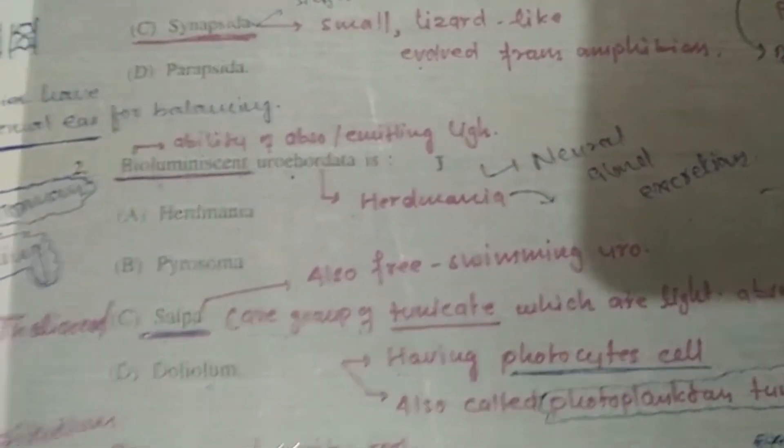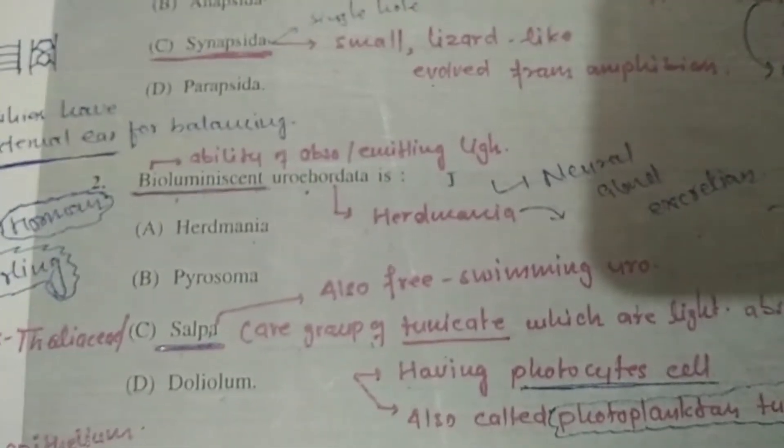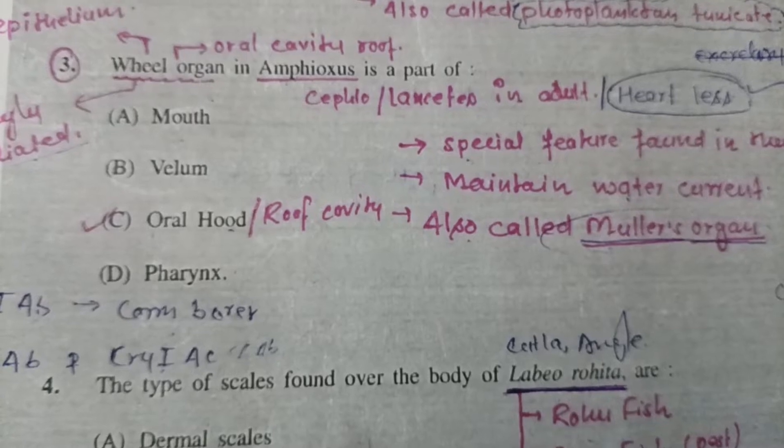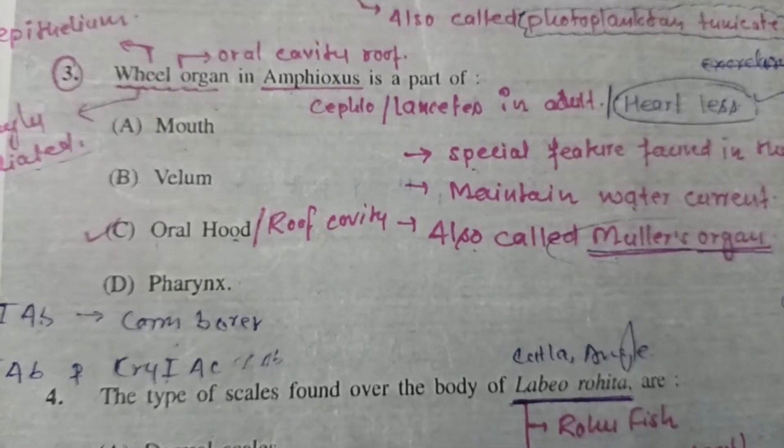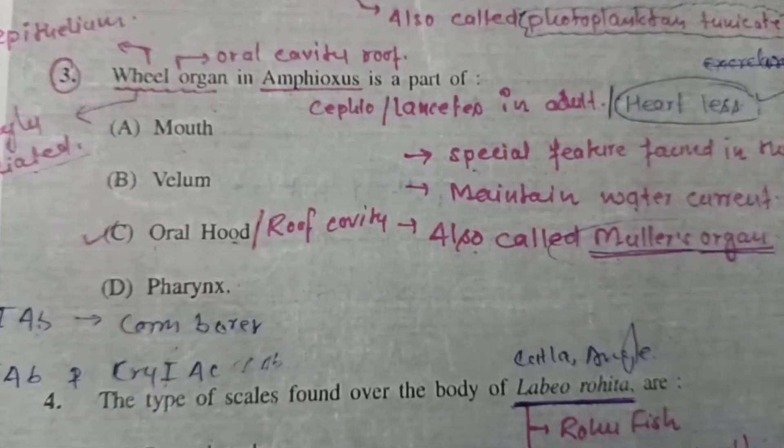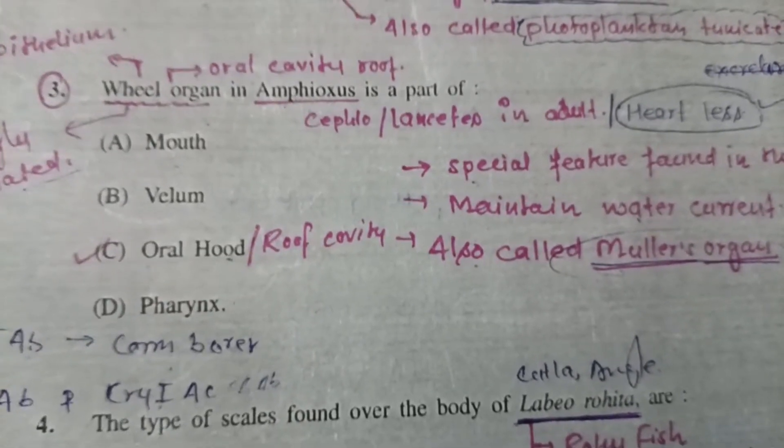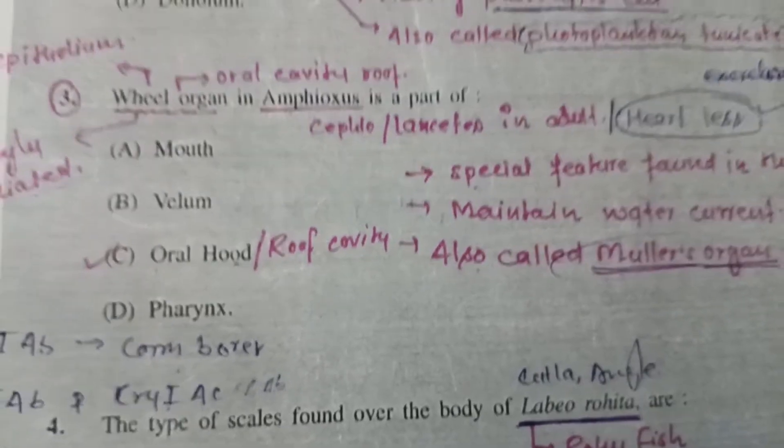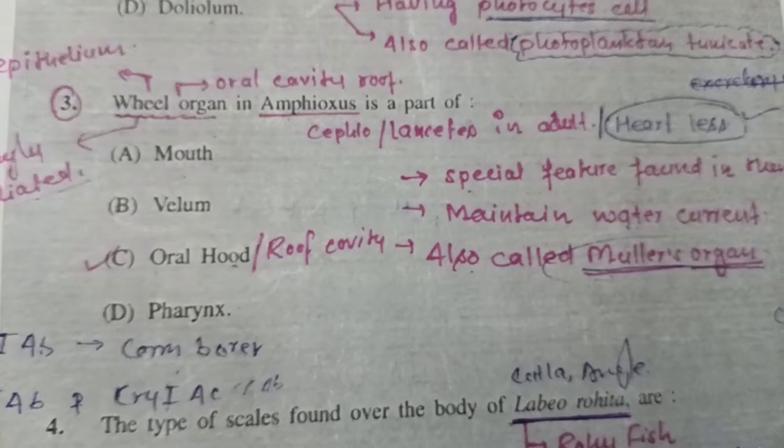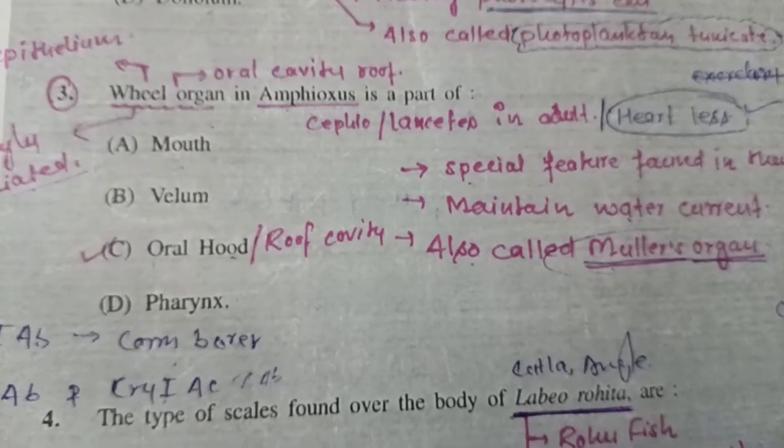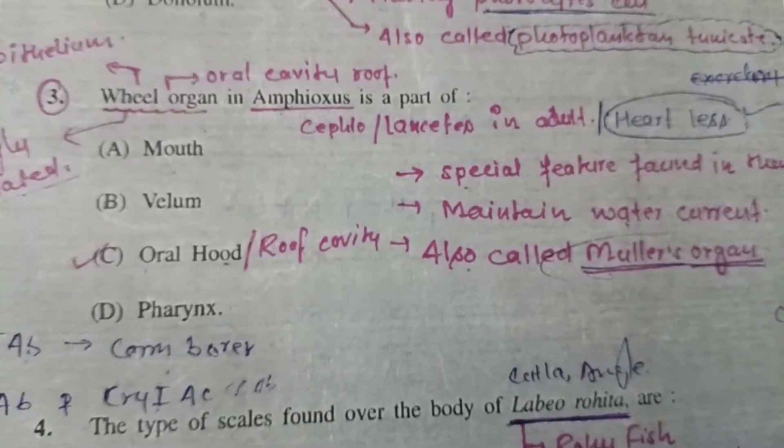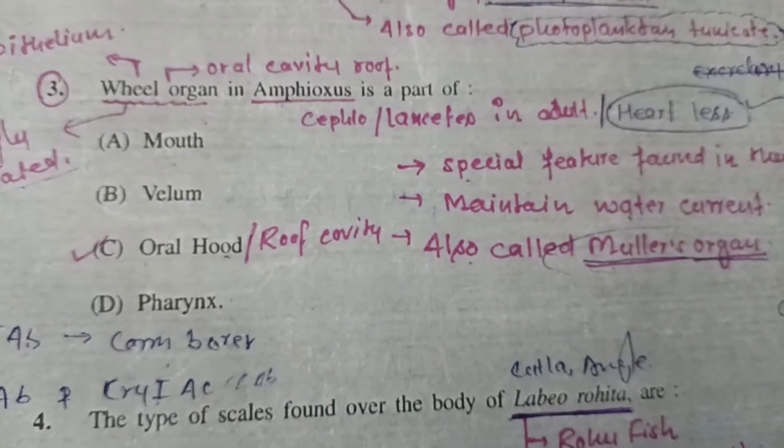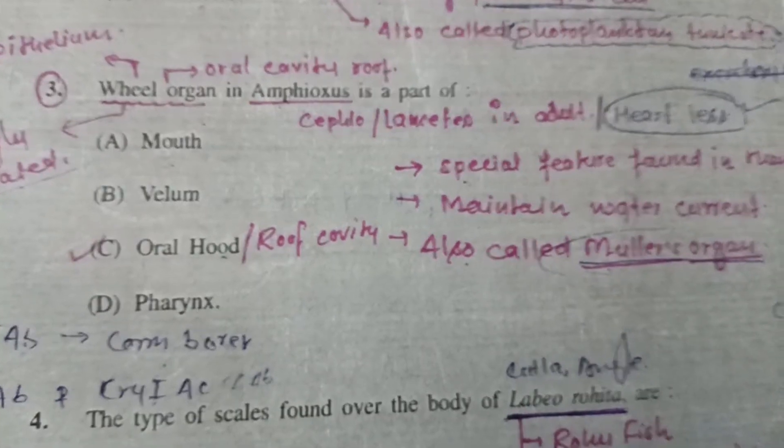Question 3: Wheel organ in Amphioxus is part of - Amphioxus is a cephalochordate also known as lancelet, having a peculiar character of notochord which extends from head to tail and remains throughout their lifespan. Wheel organ is a special feature found in them which maintains water current in their body, also known as Muller's organ. Basically it is part of oral hood, so correct option is C.